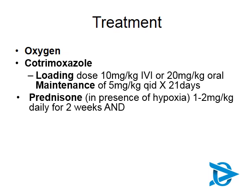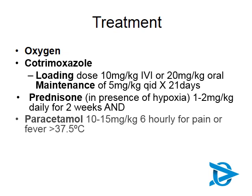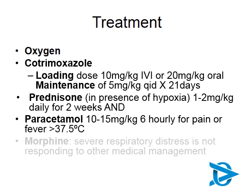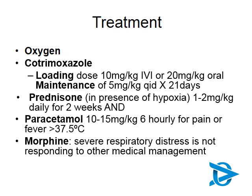An important early decision is about prednisone. Studies have shown that children with hypoxia and reduced oxygen saturations benefit from prednisone with much better outcomes. In South Africa, we tend to use 1–2 mg/kg daily for two weeks, but do discuss this with your local hospital. Keep the child comfortable — use paracetamol for pain or fever, though use for fever is more controversial. If there is severe respiratory distress and the child is getting exhausted while not yet responding to co-trimoxazole, a short course of morphine may be considered.